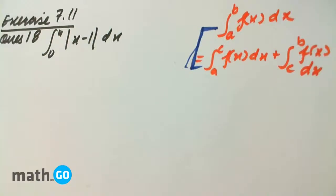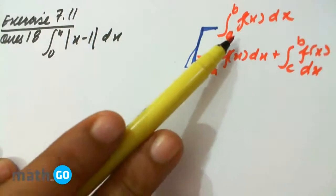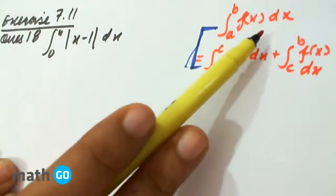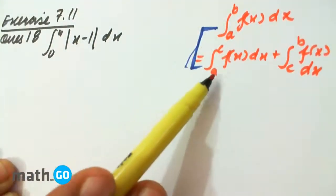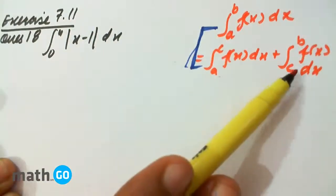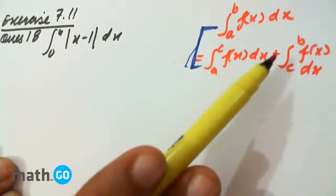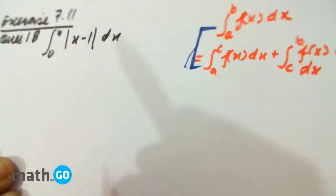Exercise 7.11, question number 18. Now we use this property that if we have to integrate a function, then we can break it from a to c and c to b. For example,